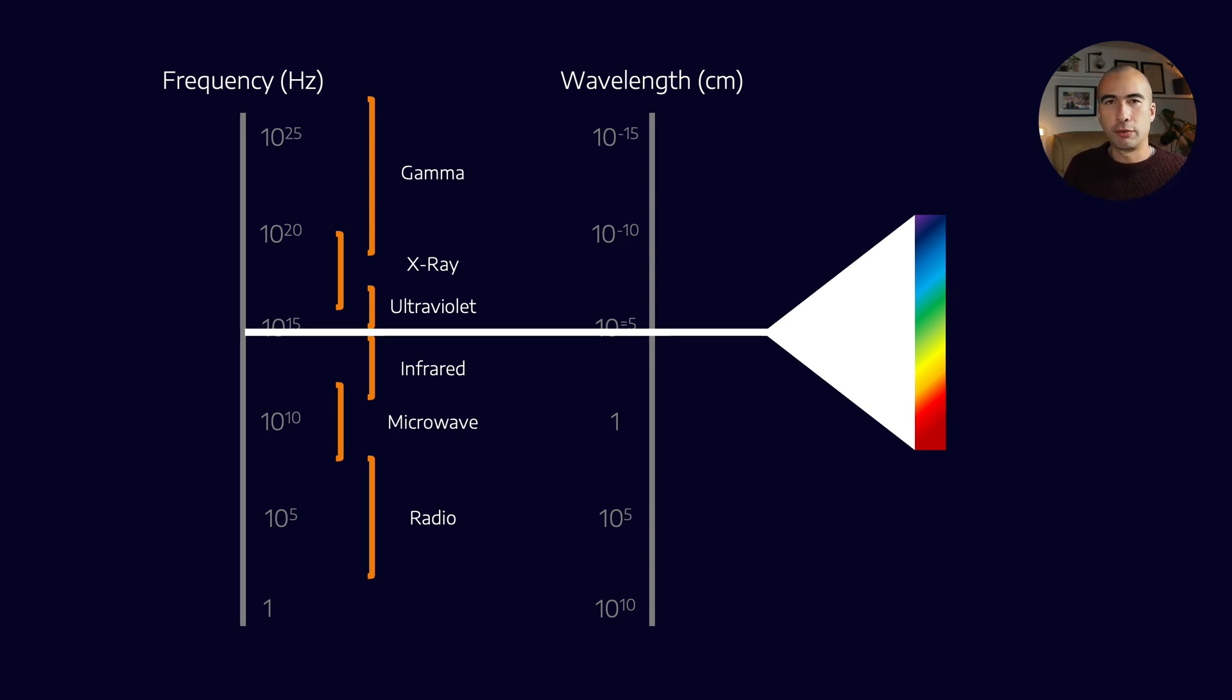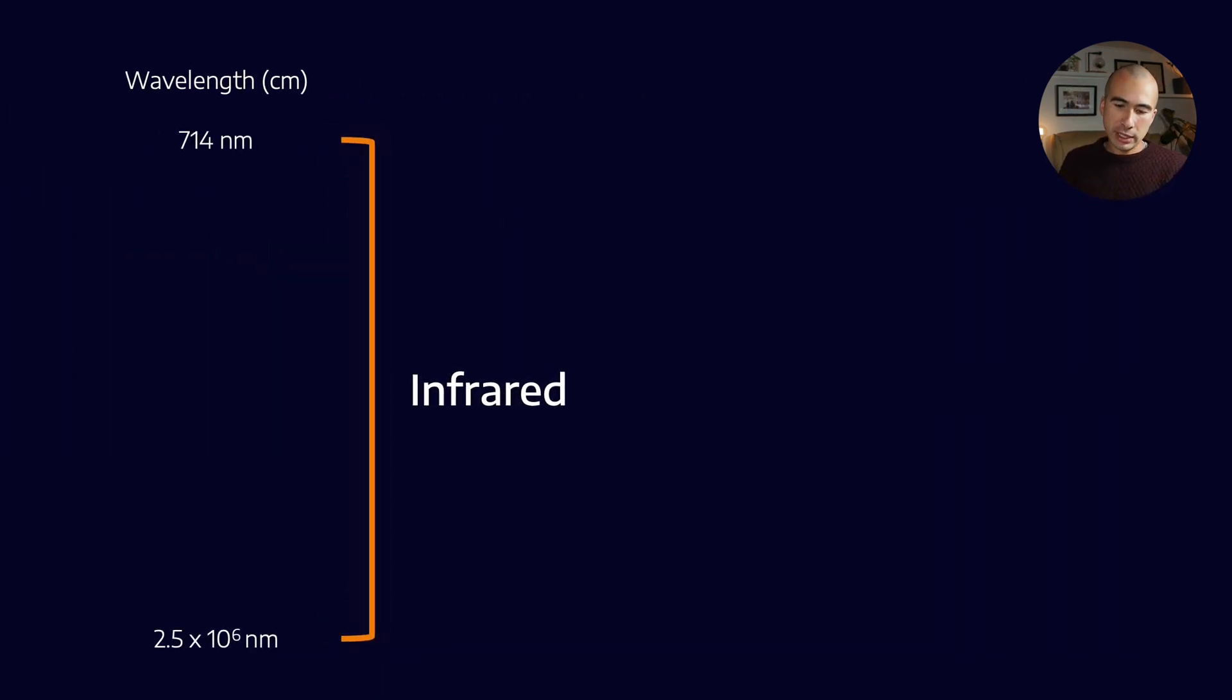Now the one that we're interested in for the purposes of FTIR is obviously infrared, so we want to understand how those wavelengths interact with molecules. Now infrared exists roughly between the band of 700 nanometers and about two and a half million nanometers. That's the wavelength that we're talking about.